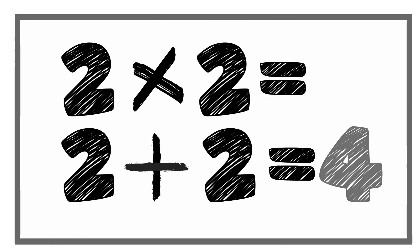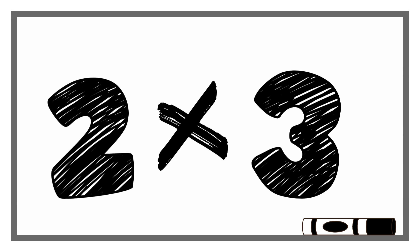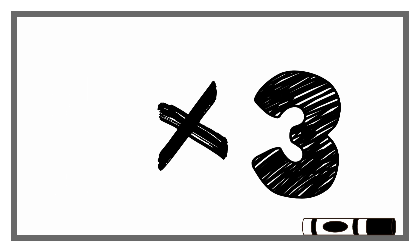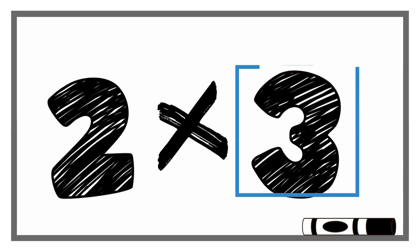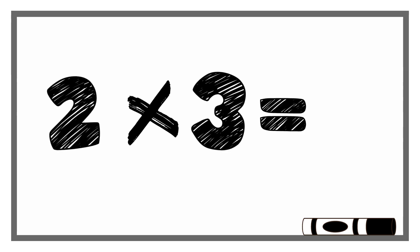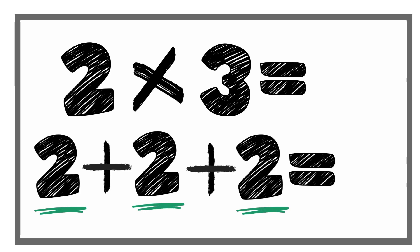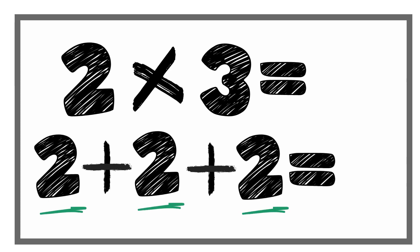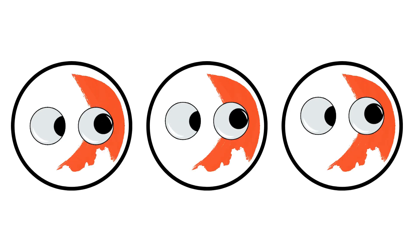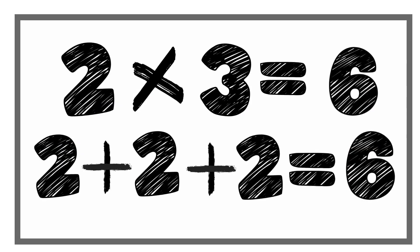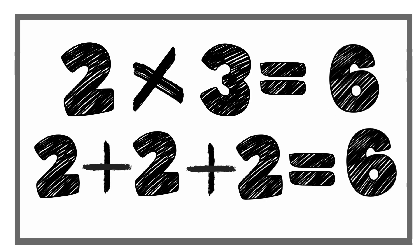Remember, in multiplication, the first number is what you are multiplying. The second number is how many times you are expanding the first number. When we have 2 times 3, we are expanding the number 2, 3 times. So we can also write it as 2 plus 2 plus 2. We can also draw 3 circles and put 2 objects in each circle to represent our equation. 2 times 3, or 2 plus 2 plus 2, equals 6. Keep practicing, Kimmy, and you'll be a multiplication superstar.